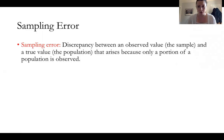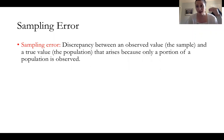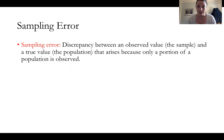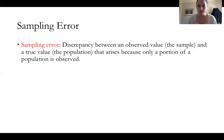When we sample, imagine the Gallup organization trying to get presidential approval. Even if they call up 5,000 Americans and get the average level of approval, does that approximate the exact average of the entire population of the United States? No, it doesn't. There is always going to be some level of discrepancy between an observed value — the sample — and a true value — the population — that arises because only a portion of the population is observed. That is called sampling error.